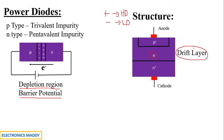Since the power diode handles very high voltages, we need to ensure it does not burn out under reverse bias conditions. The drift layer also absorbs the depletion layer, which is why the n- layer is placed between the heavily doped p+ and n+ layers.